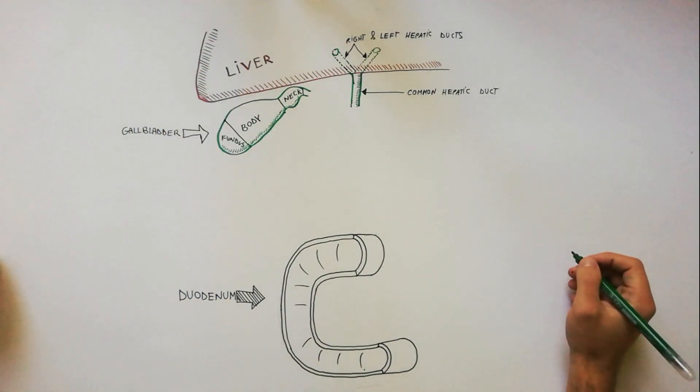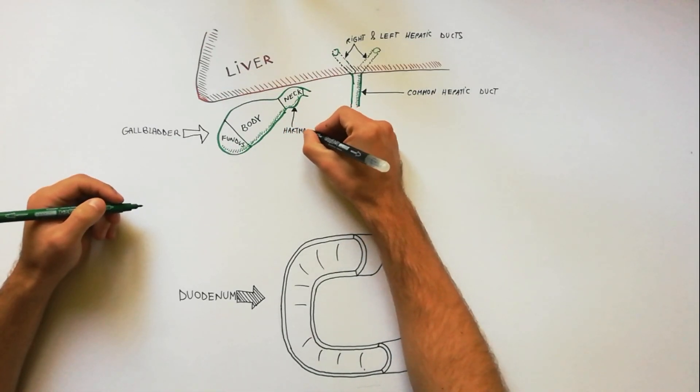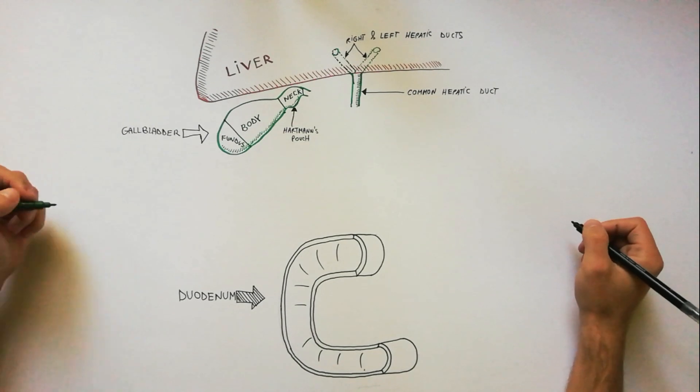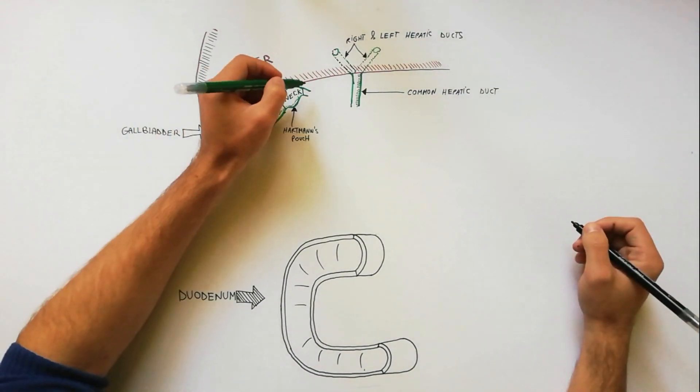The neck in its posteromedial wall shows a pouch-like dilatation, called Hartmann's pouch. This pouch is directed downward and backward.